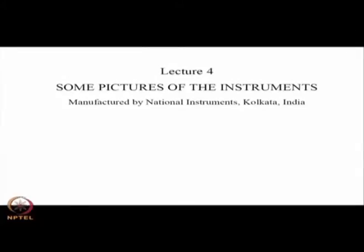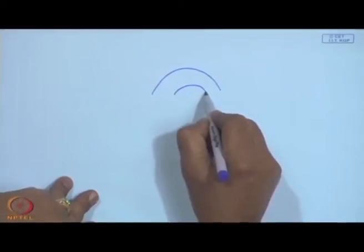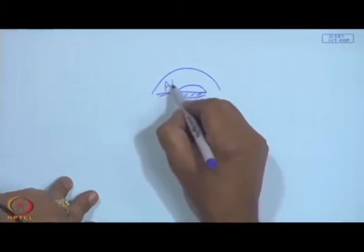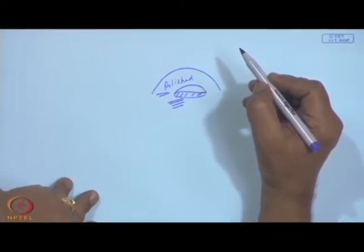I shall show you some pictures of the instruments so you will have a better idea of how they work. The cross-section details cannot be shown because the instruments are working and could not be broken. These are manufactured by National Instruments in Calcutta, India, though I believe the company is no longer working. First, you will see a pyranometer: you can see the glass bowl in the middle, with two concentric hemispheres, with Parsons black at the middle. There is a thermopile — basically thermocouples in series — which produces a millivolt output for a given radiation input.